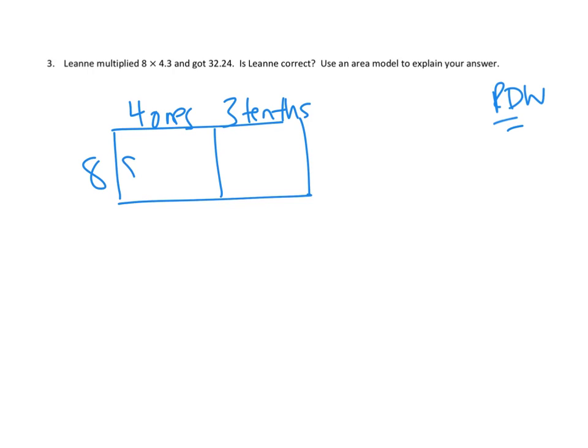This would be 8 times 4 ones, and 8 times 3 tenths. 8 times 4 ones. 8 times 4 is 32, so thirty-two ones. That's just 32. And then, 8 times 3 tenths would be 24 tenths. Twenty-four tenths. If it's 24 tenths, it would actually be the same as 2.4. Oh! I think I see what Leanne did.